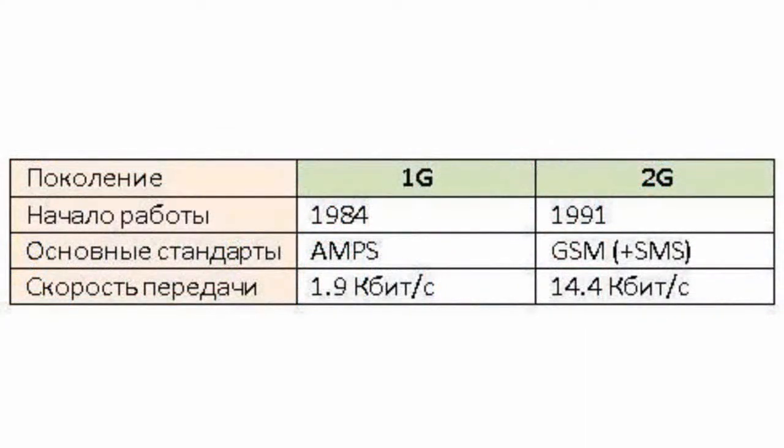The 2G standard is the well-known GSM, operating at a range of 1800 MHz — the most optimum frequency. It uses Time Division Multiple Access, TDMA, where multiple users separated by time intervals of transmission can operate in the same frequency band.